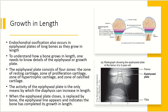The activity of the epiphyseal plate is the only means by which the diaphysis is able to increase in length. When the epiphyseal plate closes, it's replaced by bone, and the epiphyseal line appears. This indicates that the bone has completed its growth in length, so you're not going to grow any taller.